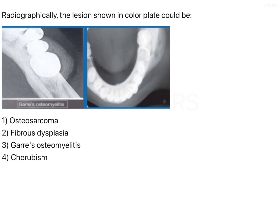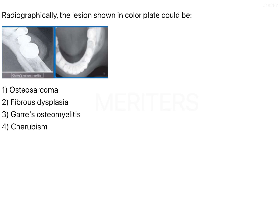The question is, radiographically, what could the lesion shown in the image be? The image has already shown that it is Garré's osteomyelitis. However, if we set that aside, what we need to remember is that you can clearly see in the image the entire periosteum around the tooth — this is soft tissue. You can see the occlusal surface in this region, and you can identify the border of the mandible.